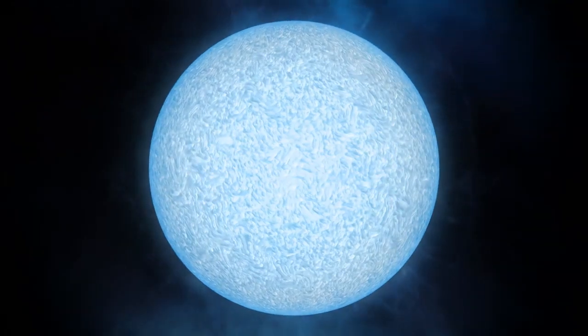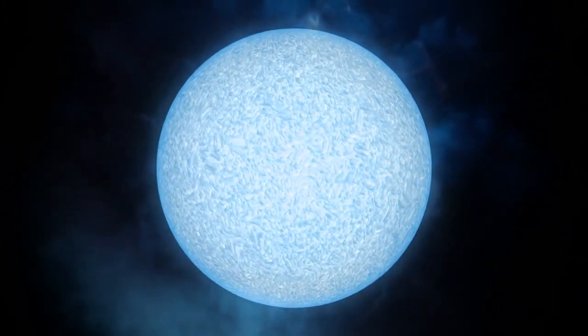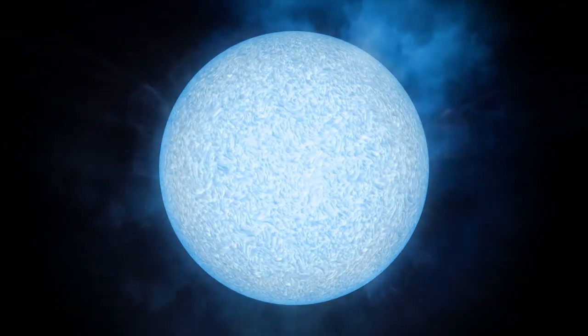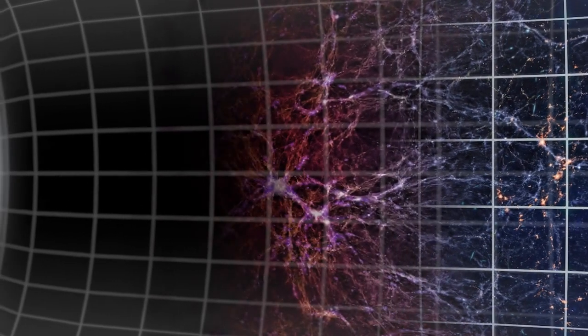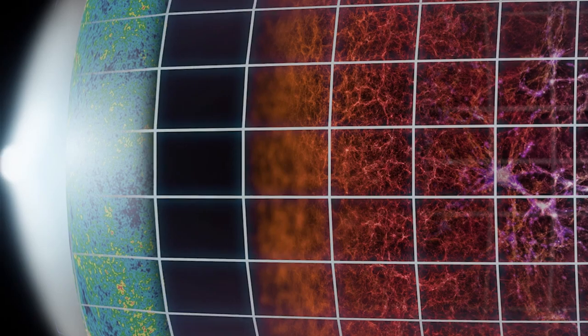The first stars were massive and energetic enough to strip the surrounding hydrogen atoms of their electrons again. This time is called the epoch of re-ionization. This era began probably as early as 400 million years after the Big Bang, and it lasted for several hundred million years.